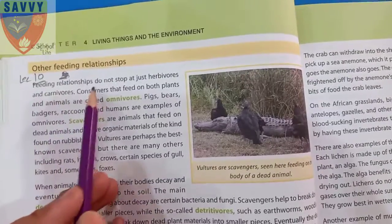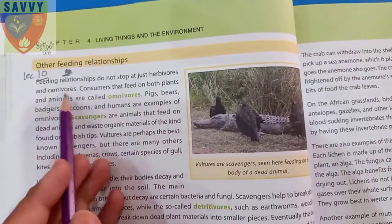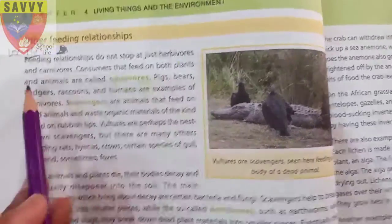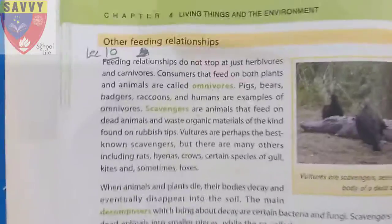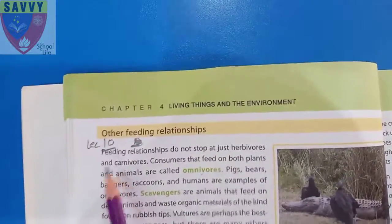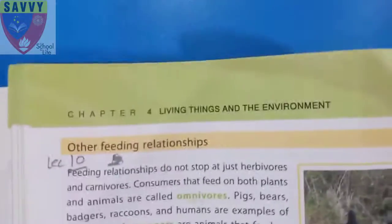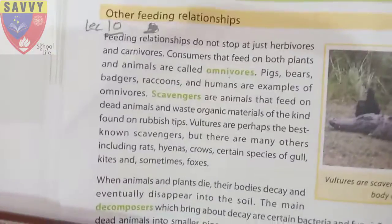Feeding relationships do not stop as just herbivores and carnivores. Consumers that feed on both plants and animals are called omnivores.